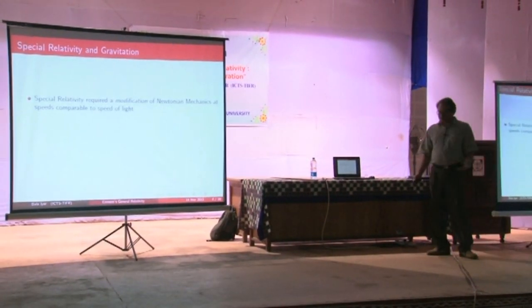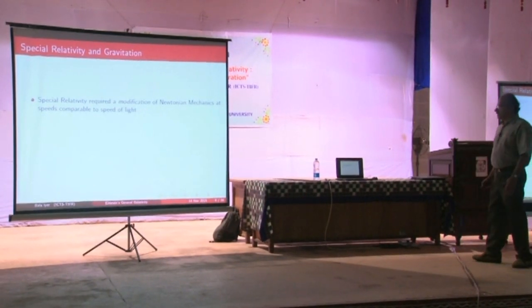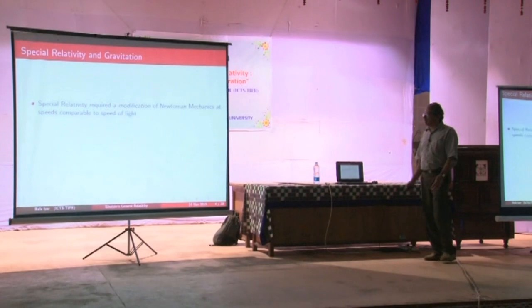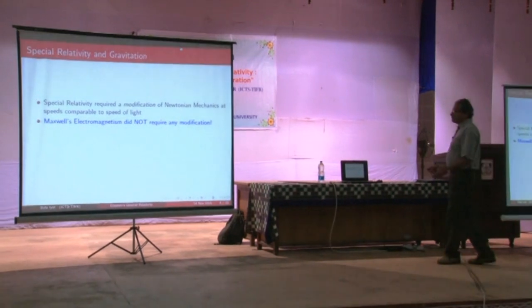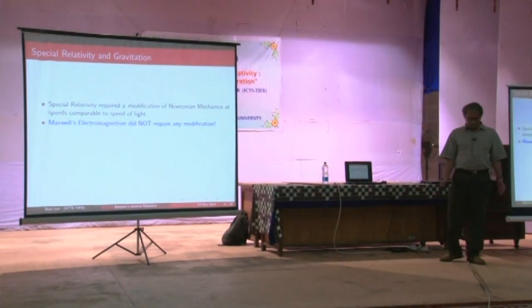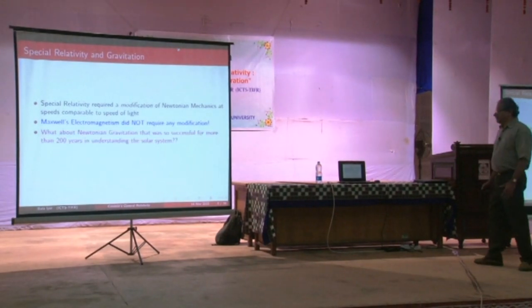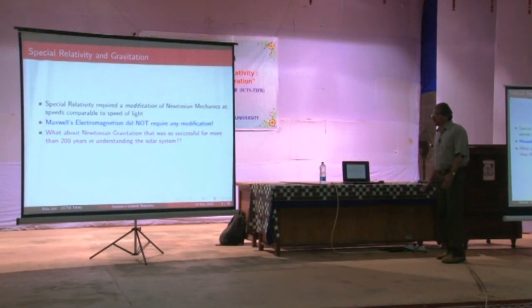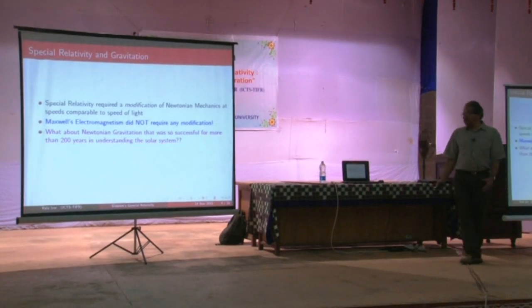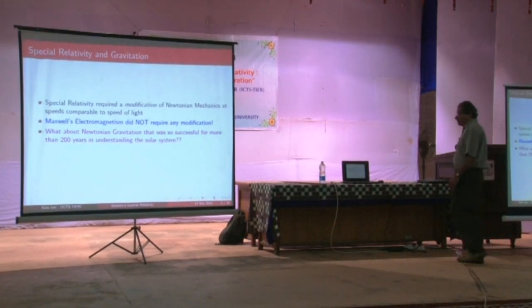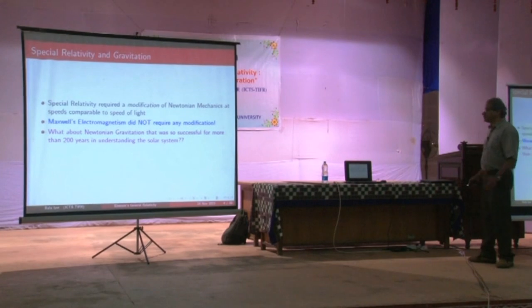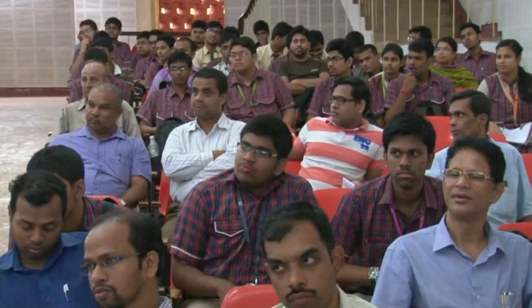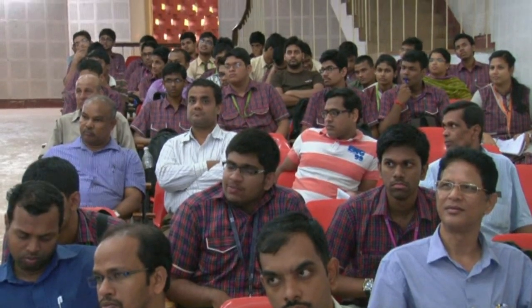In 1905, special relativity came into being, and we know that it required the modification of Newtonian mechanics when the speeds of systems become comparable to the speed of light. If you looked at the equations of Maxwell's electromagnetism, they did not need to be changed. So the question obviously is: what about Newtonian gravitation, which had been a successful theory for almost 200 years and was the basis for understanding everything we knew about the solar system?